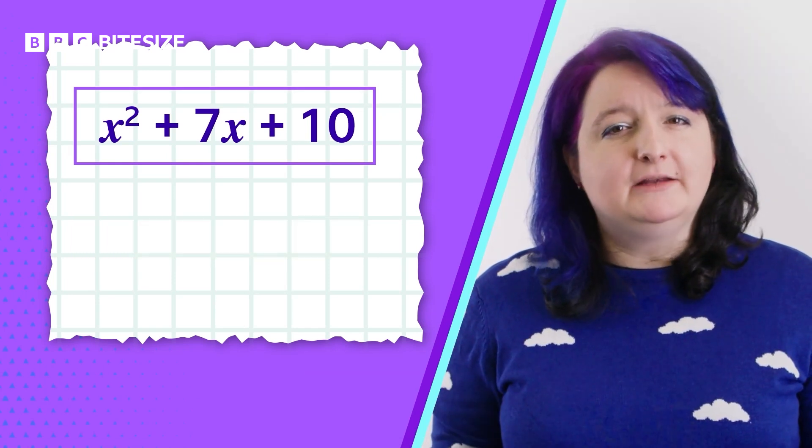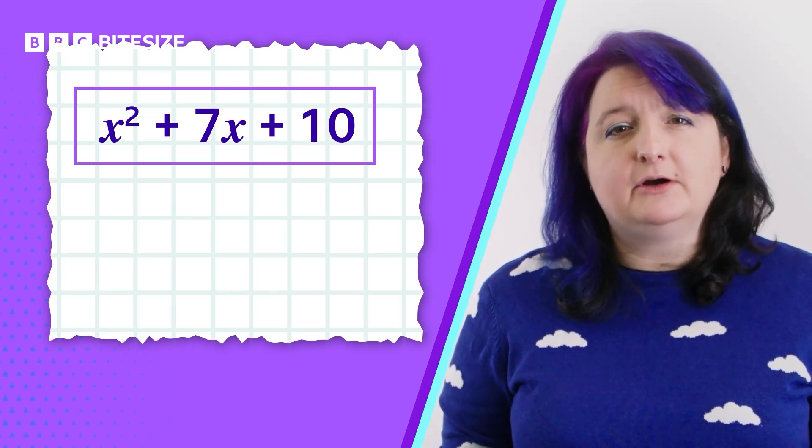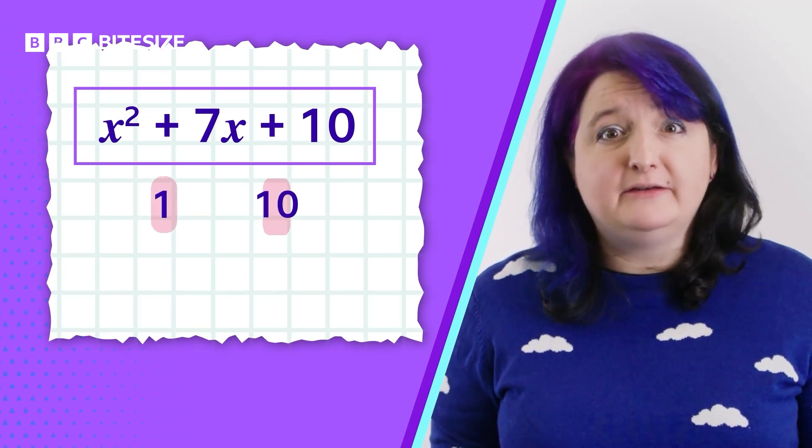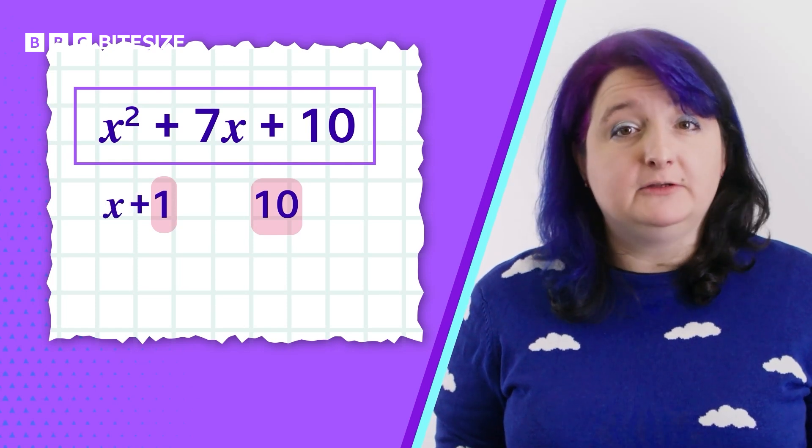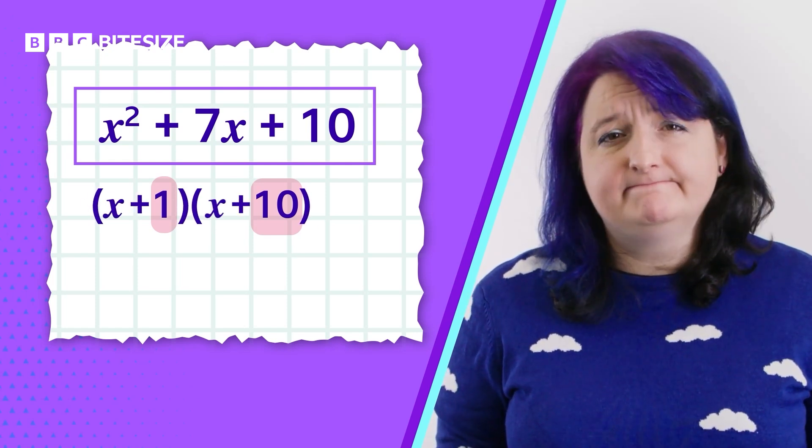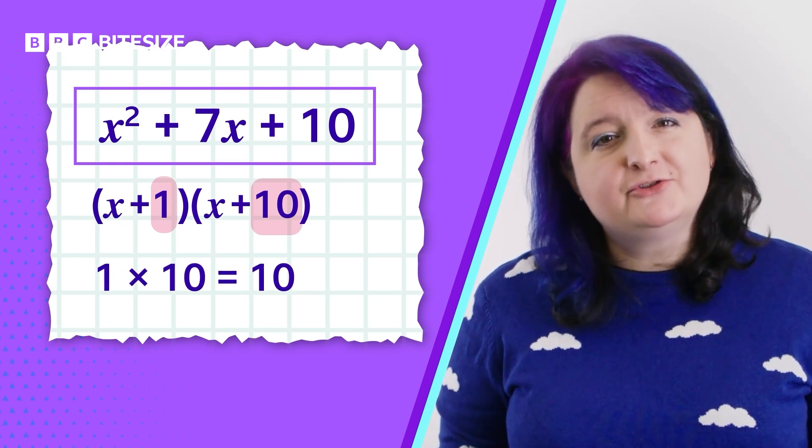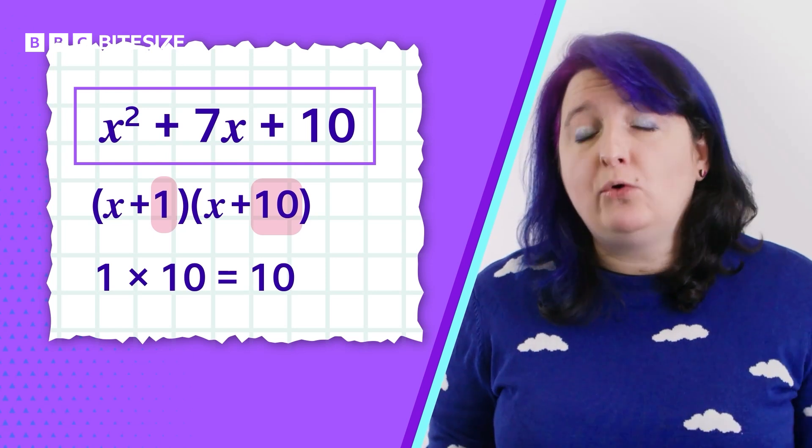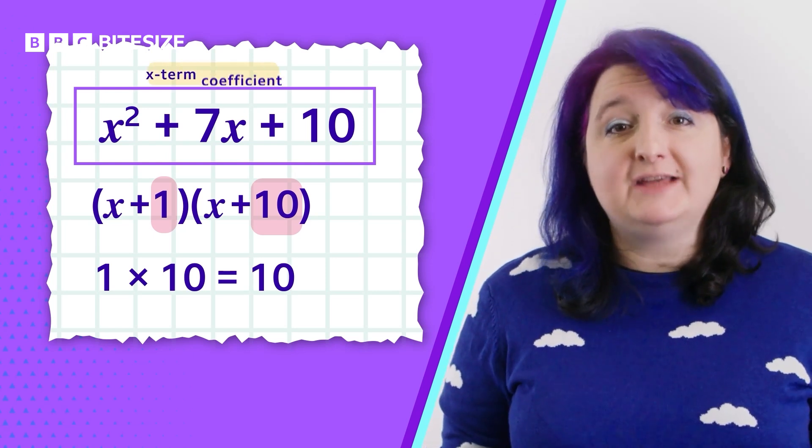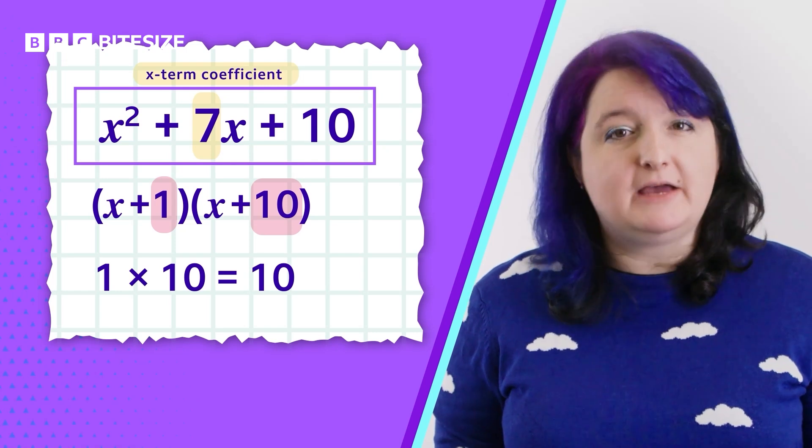But a common mistake in factorizing is picking any two factors that multiply to give the constant, like 1 and 10 for 10, and assuming the expression can be written as x plus 1, x plus 10. It seems logical, because 1 times 10 does equal 10, but factorizing isn't just about multiplication. Remember, the numbers also need to add up to match the x term coefficient, which in this example is the middle term 7x.